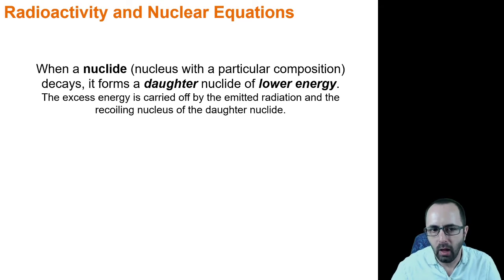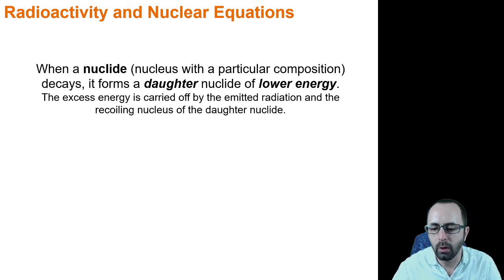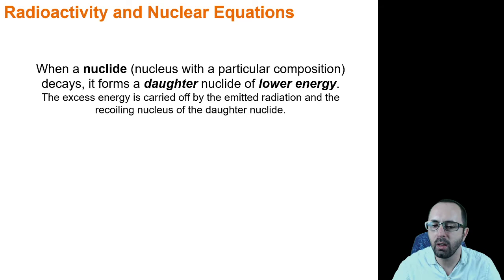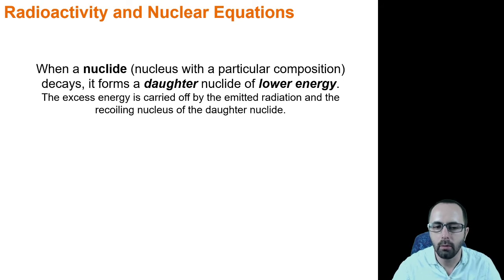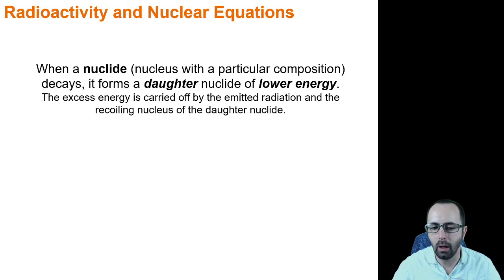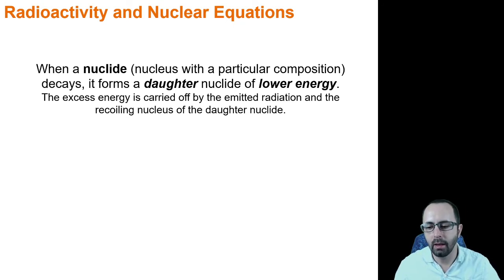How are we going to express these nuclear reactions? We'll express them with nuclear equations, which look similar to chemical equations but work a little differently. One new term is nuclide — a nuclide is the name for a nucleus with a particular composition, such as a particular number of protons and neutrons. It will sometimes decay, meaning it will fall apart in various ways or eject certain pieces of itself. When it does, it forms a daughter nuclide, generally moving in a direction of lower energy.